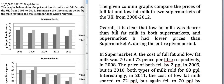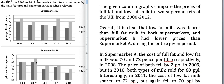Overall, it is clear that low-fat milk was dearer than full-fat milk in both supermarkets, and Supermarket B had lower prices than Supermarket A during the entire given period. You can see that the columns for low-fat milk are always bigger than the columns for full-fat milk, so low-fat milk was consistently more expensive in both supermarkets.